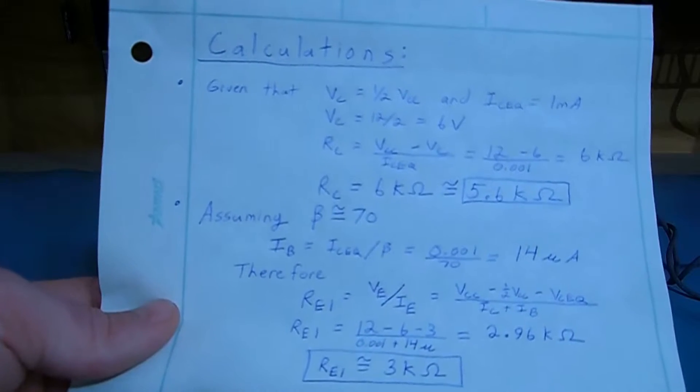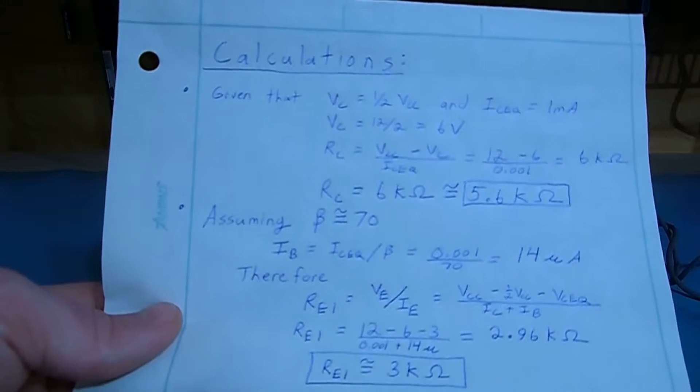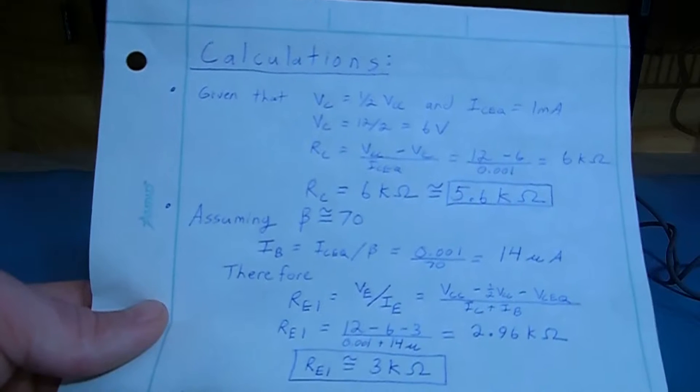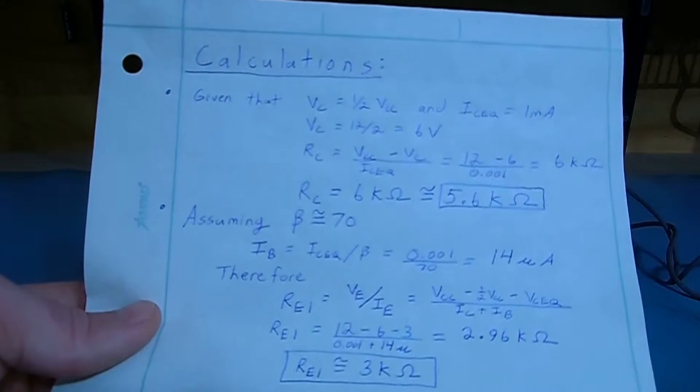Next assuming we can use our expected beta of 70, we can take our collector current, divide by beta, and that will give us our base current, which in this case is 14 microamps.